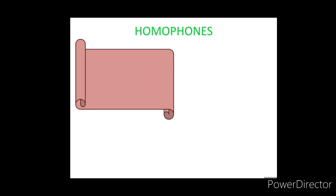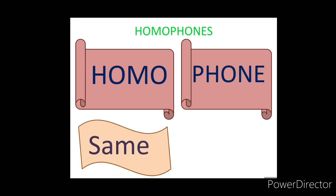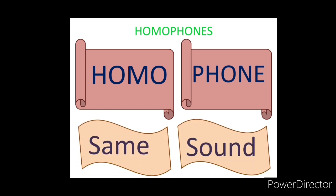Homophones are basically made up of two words: 'homo' and 'phone'. Homo means same, whereas phone means sound. Thus, homophones are words with the same sounds.